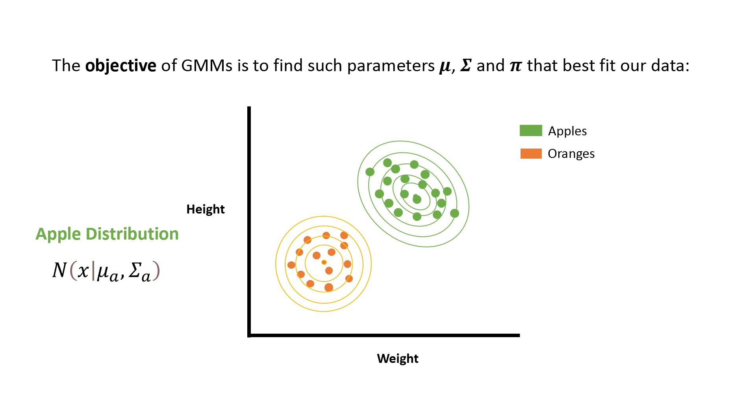The apple distribution is a normal distribution where we observe x given the mean vector of our apples and the covariance matrix of our apples. And the orange distribution has a similar distribution but this time with the mean vector of the oranges and the covariance matrix of the oranges.